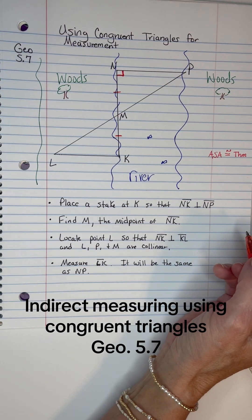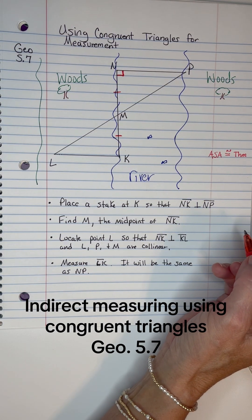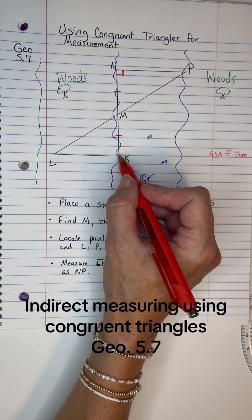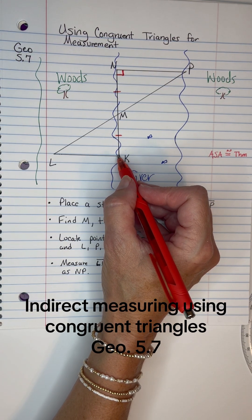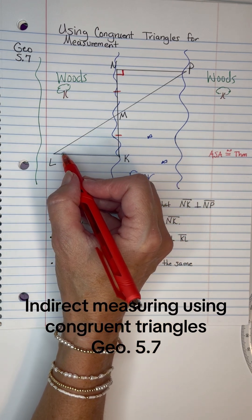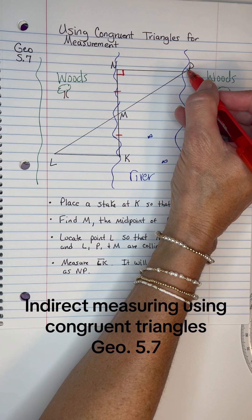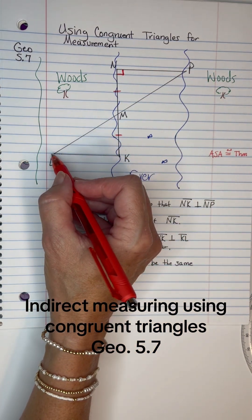Now we're going to go down to K and walk straight across, perpendicular to NK. Stop when you come into line with M and P—when you're in a straight line with those, place another stake at L.